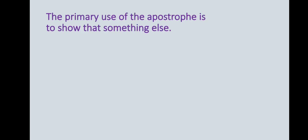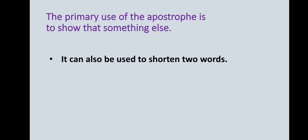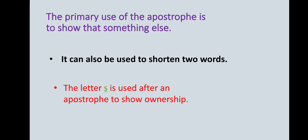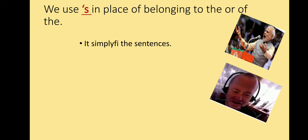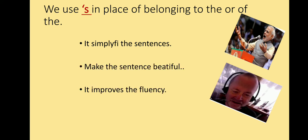Now, let's come to it in detail. Why do we use this apostrophe? The primary use of the apostrophe is to show ownership. It can also be used to shorten two words. The letter S is used after an apostrophe to show ownership. See the example: 'king's pillow' means the pillow of the king, or the pillow belonging to the king. 'King's sword' means the sword belonging to the king. This apostrophe is used for fluency — we improve our fluency and simplify the sentences. It makes the sentence beautiful.